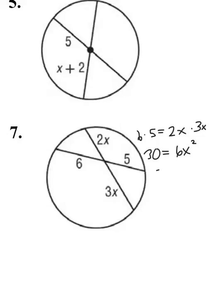Divide by 6 on both sides. Then to get rid of the square, I'm going to take the square root of it. The square root of 5 rounded to the 10th is going to be 2.2.